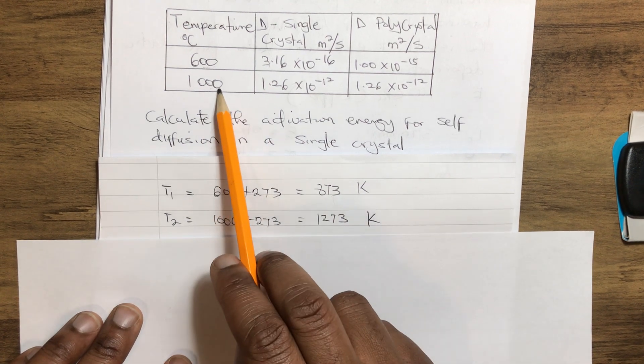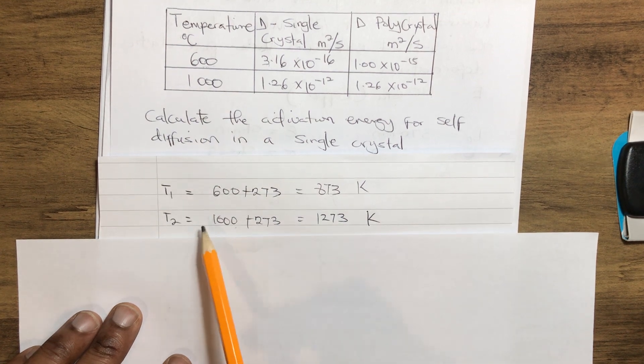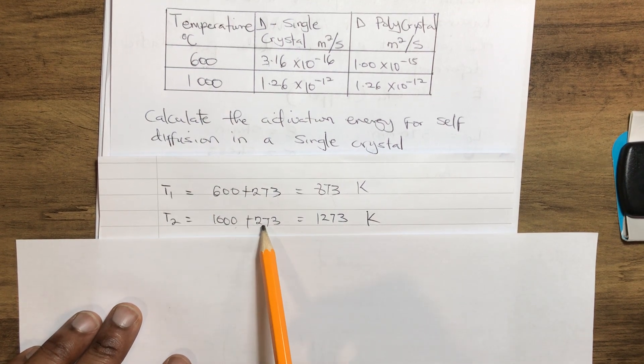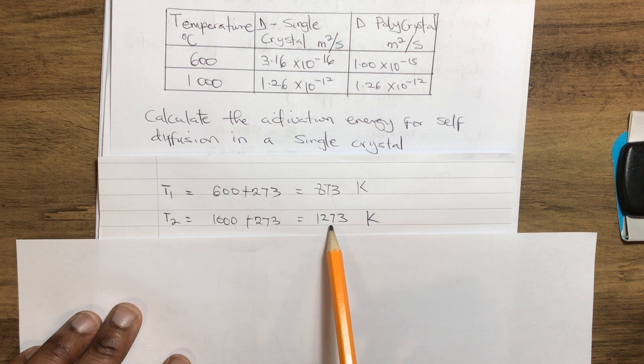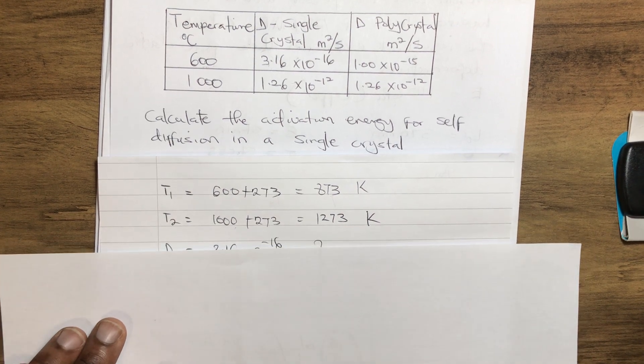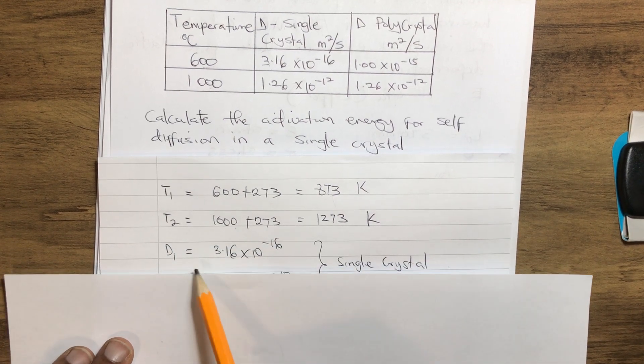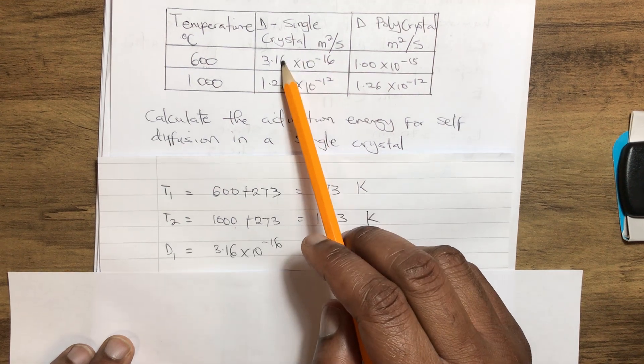Also, the 1000 Celsius plus 273 will give us 1273 Kelvin.